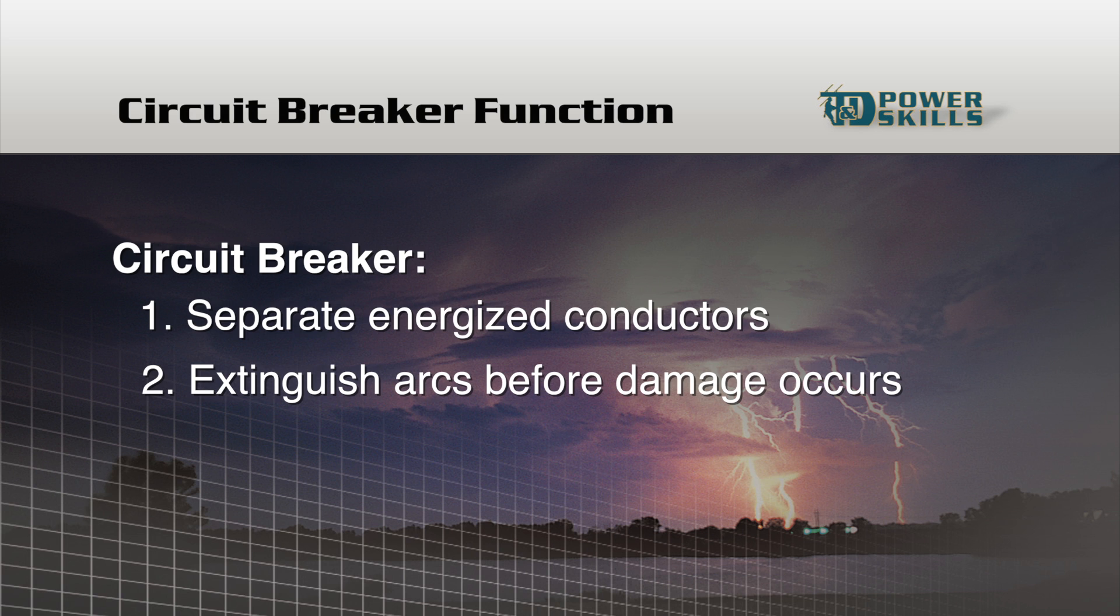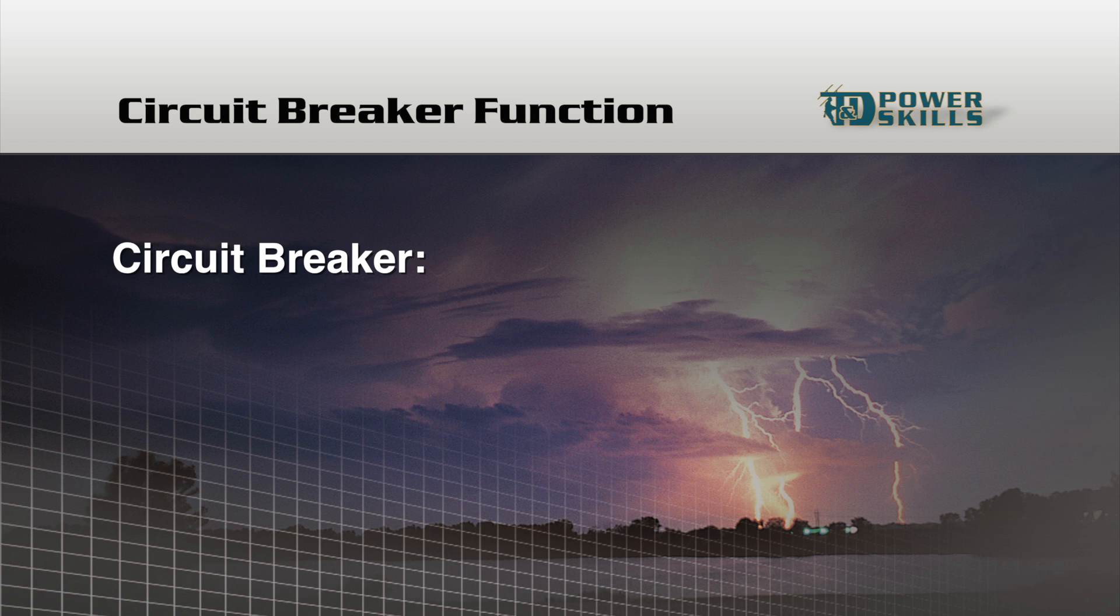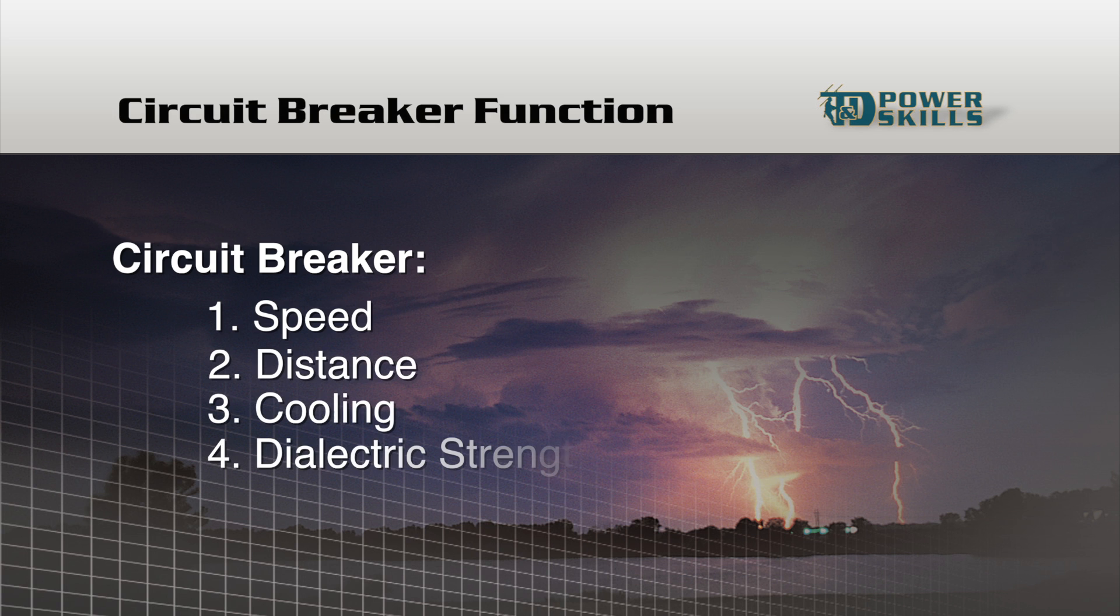In a circuit breaker, a number of factors work together to extinguish an arc and interrupt a circuit. The main factors we're going to look at are speed, distance, cooling, dielectric strength, and current zero.